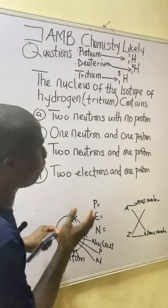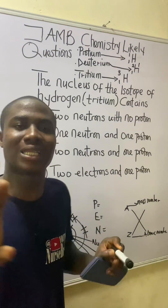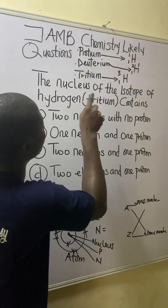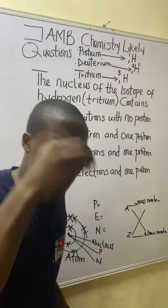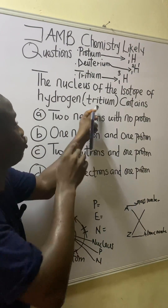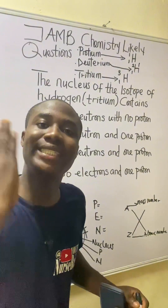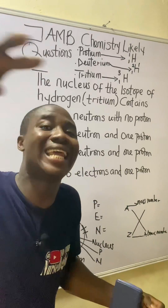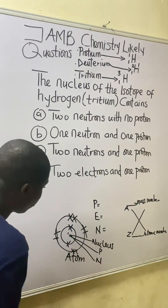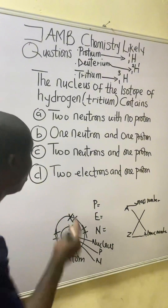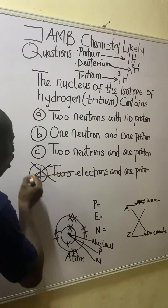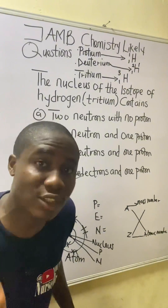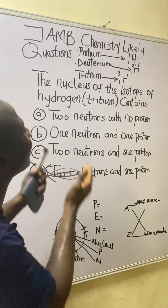Now let's analyze the options and eliminate. The question asks what the nucleus of tritium contains. Since the nucleus only contains protons and neutrons, option D — which states two electrons and one proton — is already eliminated, because the nucleus does not contain electrons.